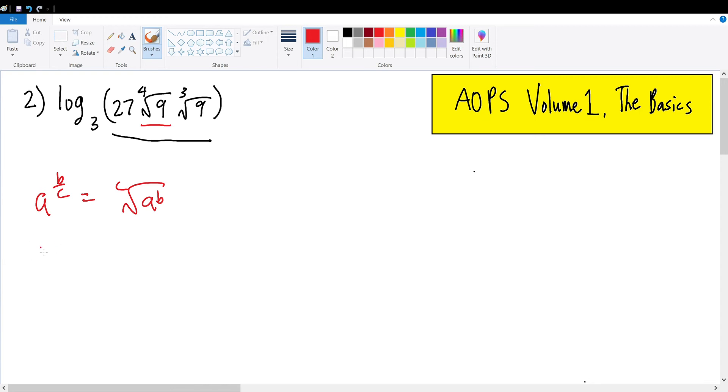So the fourth root of 9 can be rewritten as 9 to the 1/4, which equals 3 squared to the 1/4, which equals 3 to the 1/2 power, which equals the square root of 3.